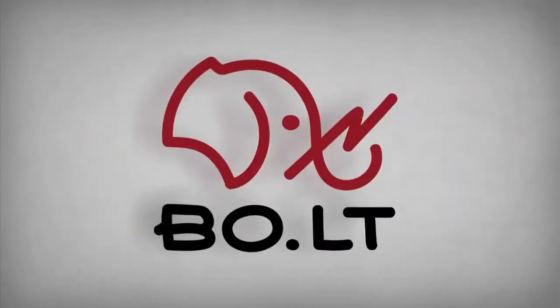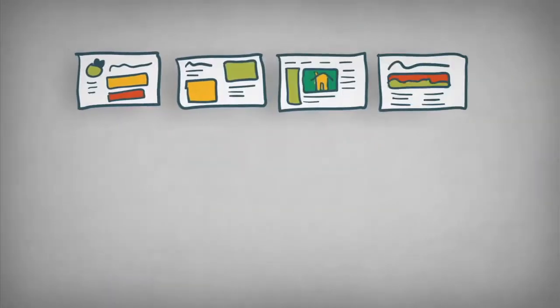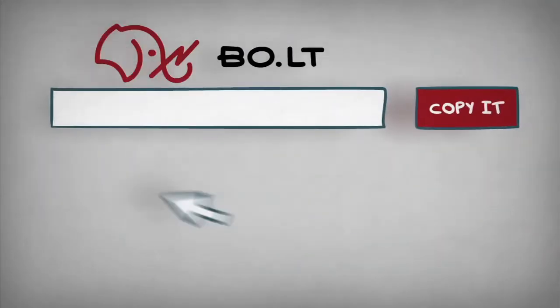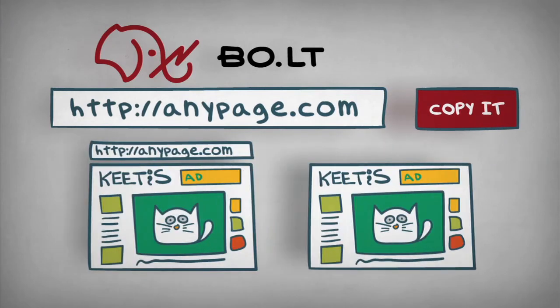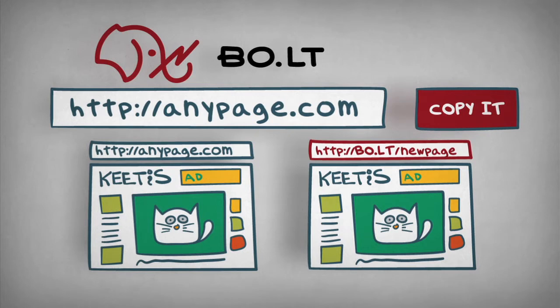Well, simply go to Bolt. Bolt allows you to create variations of any web page in seconds. Just enter any link, and Bolt will automatically create an exact copy of your page and give it a unique Bolt address.